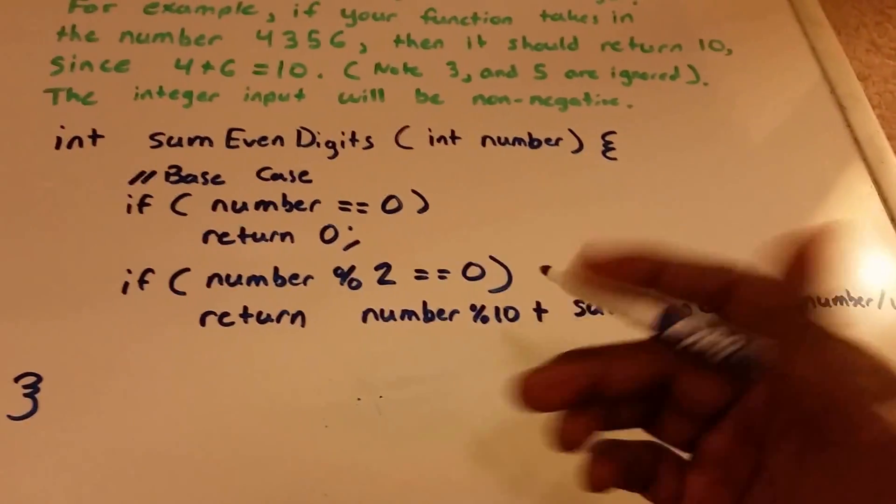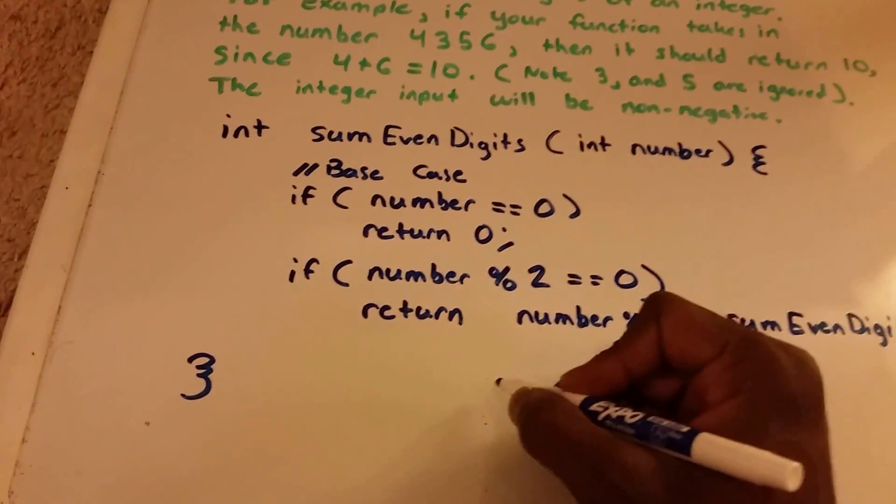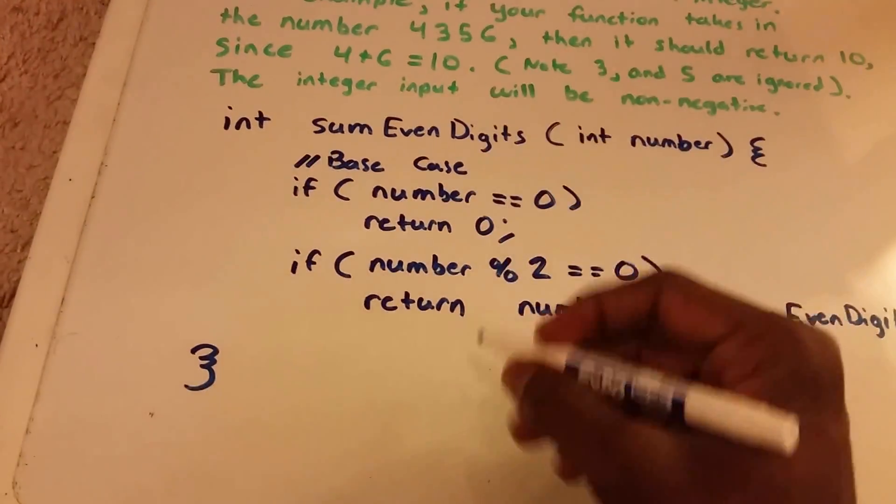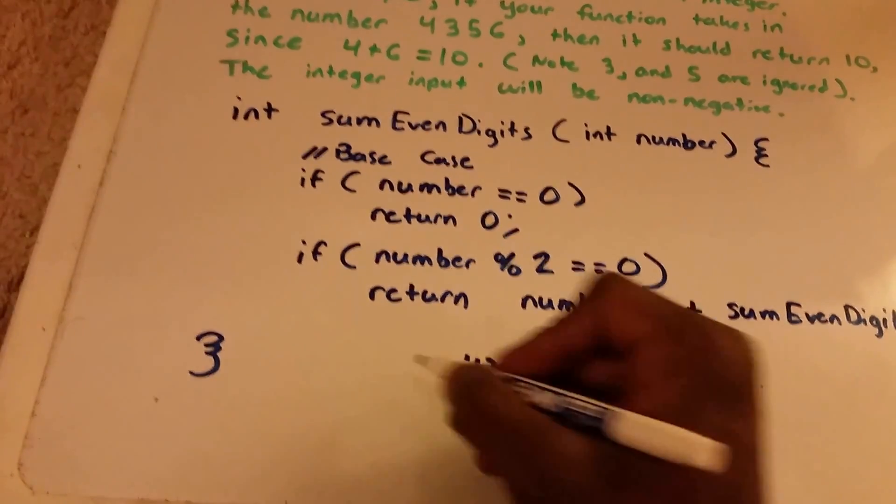For our input, we're going to do number divided by 10. Why number divided by 10? Because we need to iterate through the inputted number there. For instance, we have 4356. Right now, that's what our number equals.